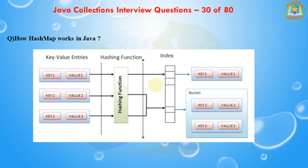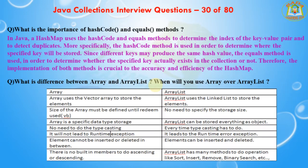The next question is: what is the importance of hashCode() and equals() methods in Java? A HashMap uses hashCode() and equals() to determine the index of key-value pairs and to detect duplicates. Specifically, hashCode() is used to determine where a specific key will be stored. Since different keys may produce the same hash value, equals() is used to determine whether the specific key actually exists in the collection. Therefore, the implementation of both methods is crucial to the accuracy and efficiency of the HashMap.